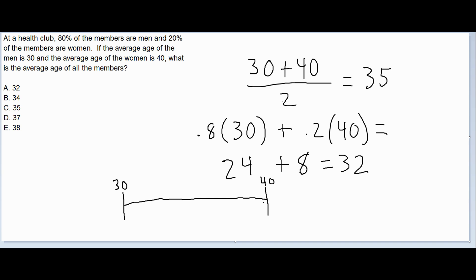It wouldn't make sense for it to be bigger than 40 or less than 30. And we've already talked about why it wouldn't be right in the middle, right? Because each group is not weighted equally.